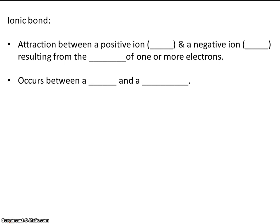As a review, an ionic bond is an attraction between a positive ion (called a cation) and a negative ion (called an anion). It's an attraction between a cation and an anion that results from the transfer of one or more electrons. You remember that an ionic bond occurs between a metal and a nonmetal.